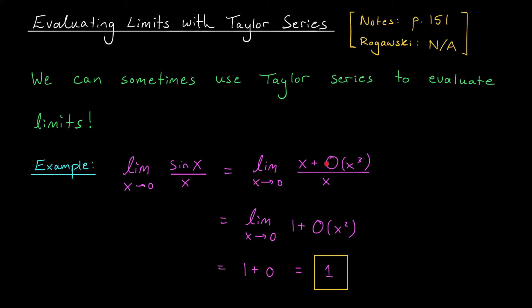And we need to know that the remaining terms are of order x cubed as x goes to zero. You see, this is enough to cancel this x on the bottom. I can divide both terms by x, and that leaves me with one plus big O of x squared. If I divide big O of x cubed by x, the exponent is going to go down by one.